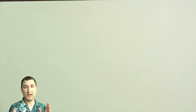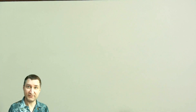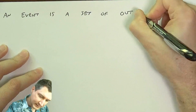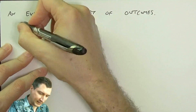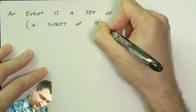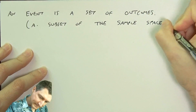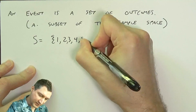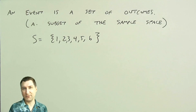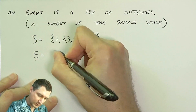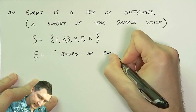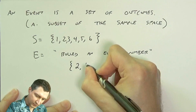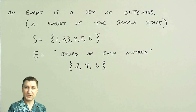Last time we talked about experiments and outcomes, and today we're going to add another piece of terminology called events. An event is nothing more than a set of outcomes — meaning it's a subset of the sample space. For example, last time we talked about rolling a die and recording the number. The sample space was one, two, three, four, five, six, and an event is usually something you can describe in words, like rolling an even number.